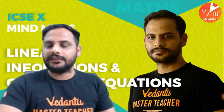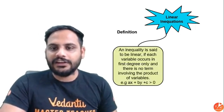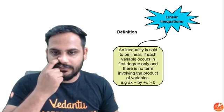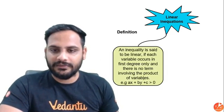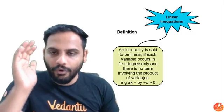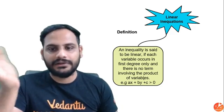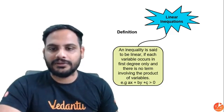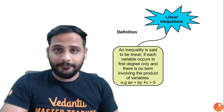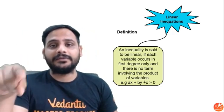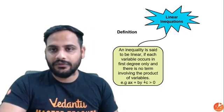The first topic is linear inequalities. In linear inequalities, the definition is: an inequality is said to be linear if each variable occurs in first degree only and there is no term involving the product of variables. All the variables present must have maximum power one. There is no term involving the product of variables - you cannot multiply x and y because that would be xy, making the power two.